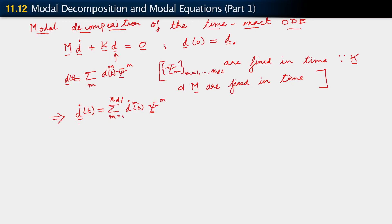We're going to substitute both these decompositions into our time-exact ODE. This implies now that M multiplying the sum over m of d_dot_m psi_m plus K sum over m of d_m psi_m equals zero.